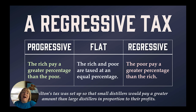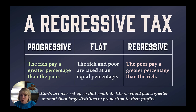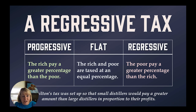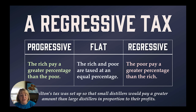With a progressive tax, the rich pay a higher percentage than the poor — if you make ten thousand dollars a year you might pay two percent, but if you make a hundred thousand you might pay four percent. A flat tax charges the same percentage regardless of income. A regressive tax typically hurts the poor more than the rich — the more you have, the lower the rate you pay. Hamilton's tax was set up so small distillers paid a greater share than large distillers based on their profits.